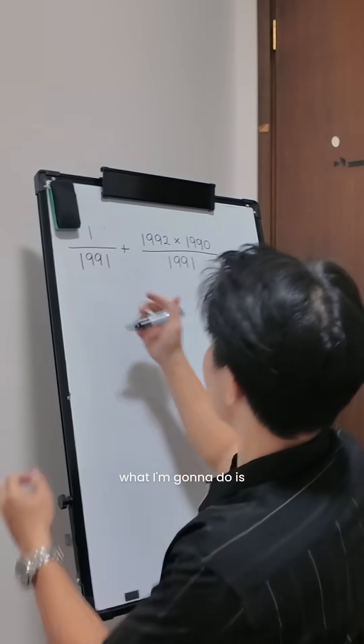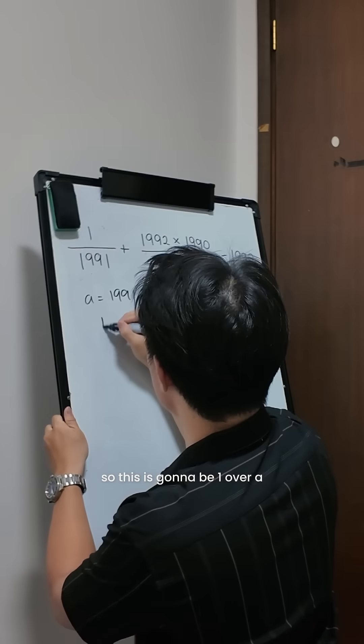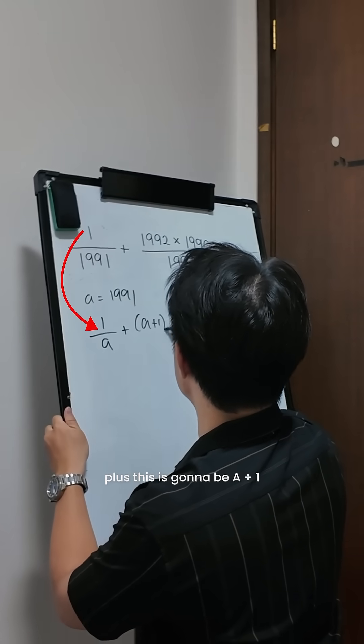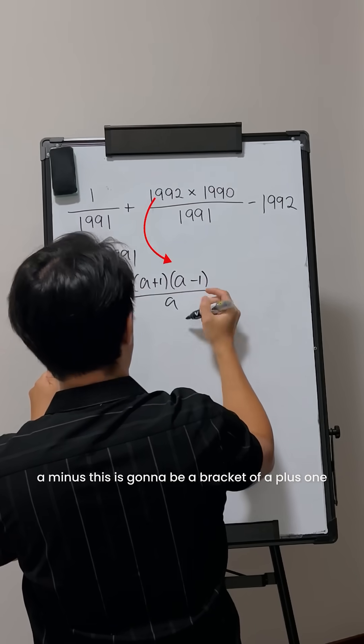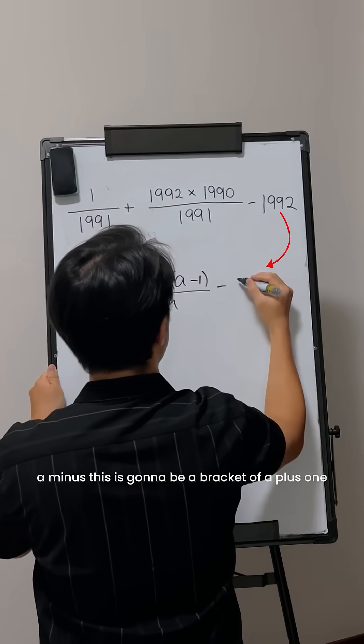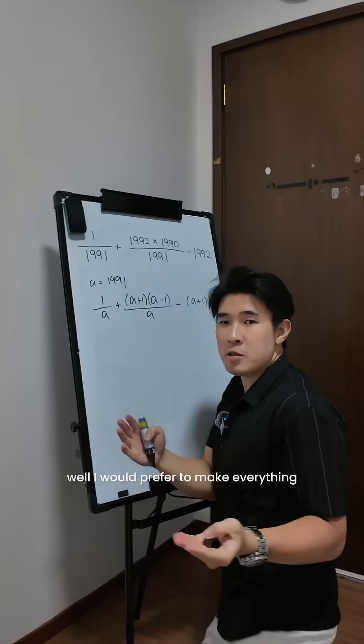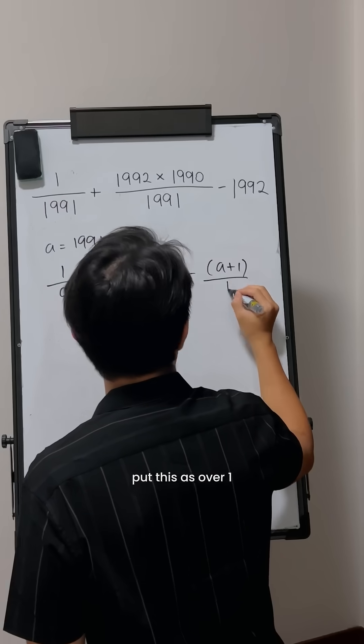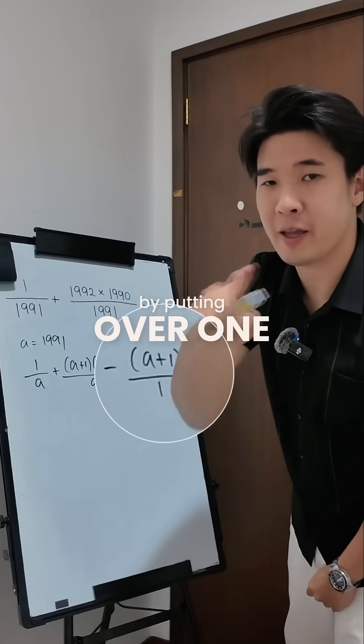Now, what I'm gonna do is I'm gonna make 1,991 as a. So this is gonna be 1 over a plus this is gonna be a plus 1 times this is gonna be a minus 1 over a minus this is gonna be a bracket of a plus 1. Well, I would prefer to make everything as a fraction and that's why I'm gonna put this as over 1. There we go. So that's the trick on making everything to be a fraction by putting over 1.